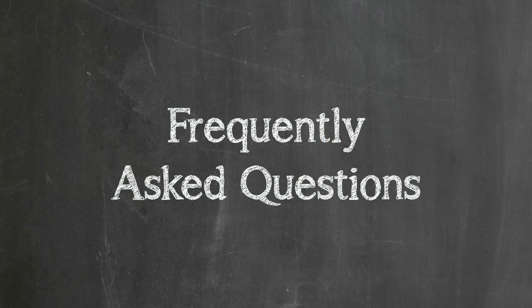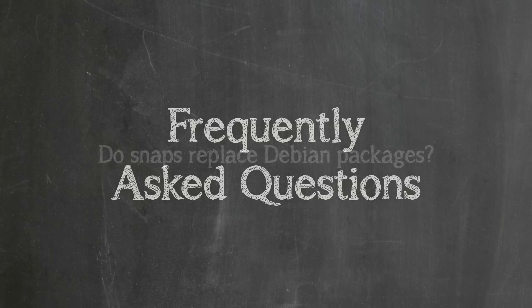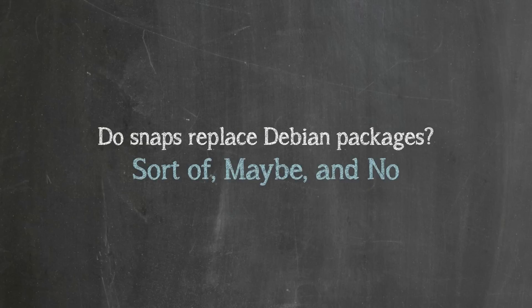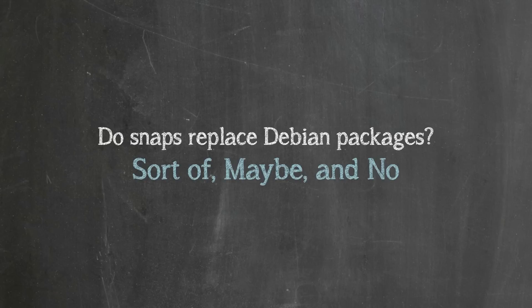This next segment answers frequently asked questions related to Snappy and snaps. Do snaps replace Debian packages? Sort of, maybe, and no. Sort of, because snaps do not replace debs entirely — even on the application layer, you will be able to install both debs and snaps. Maybe, because it's possible that snaps could take off as a universal package format, making them more abundant and potentially replacing debs on the application layer. Finally, no — because debs will stay as the foundation of the operating system. Even if snaps replaced debs on the application layer, the system would still be constructed with debs, and in fact Ubuntu Core itself is created via debs.